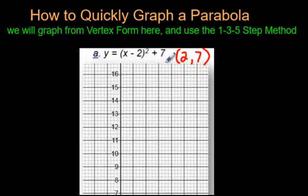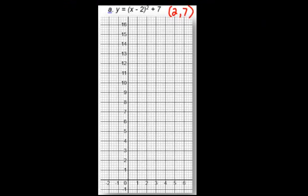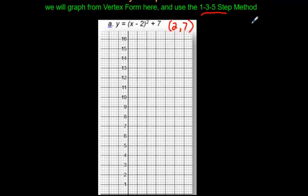And just for a quick review, what if it said x plus 2 here? Well, what's the opposite of x plus 2? It would be negative 2 instead of a plus 2. So you'd put a negative 2 and a 7 if you had a plus 7 on the outside. If you had an equation that said x minus 5 minus 9, you would take the opposite of minus 5, you'd put 5, and you would put a 9 right here. So see how vertex form gives you the vertex super fast? We're going to use something called the 1-3-5 step method.